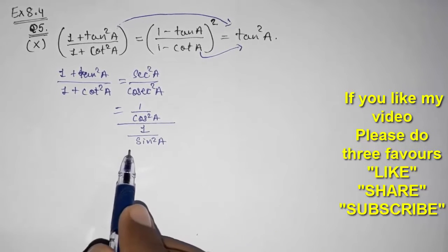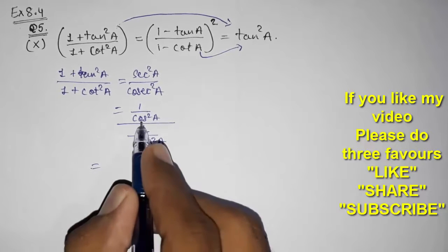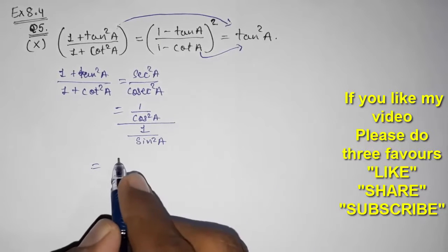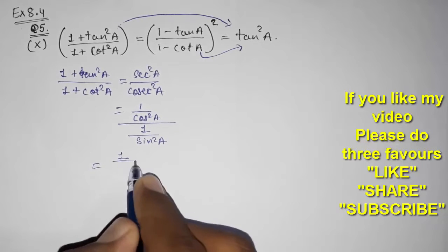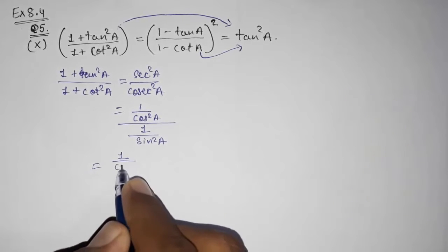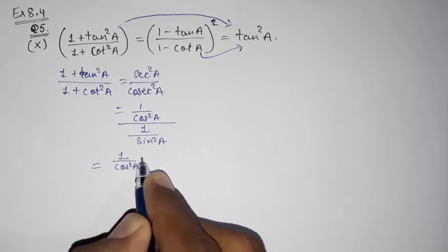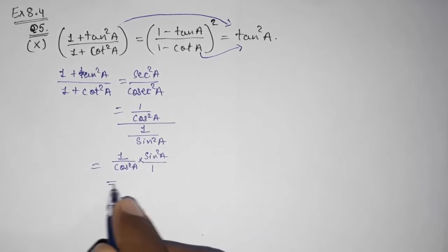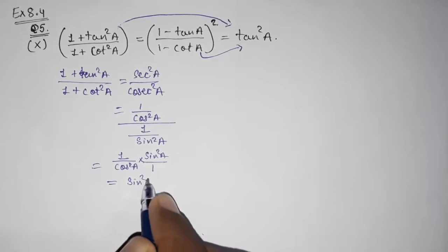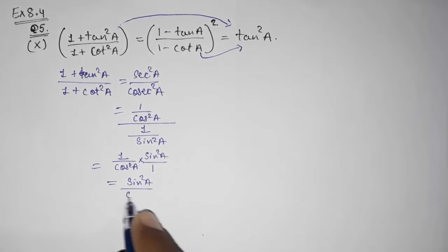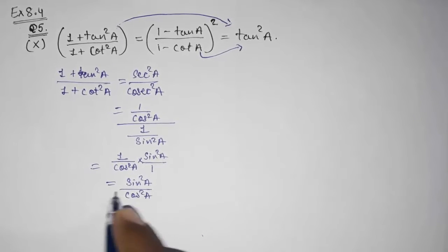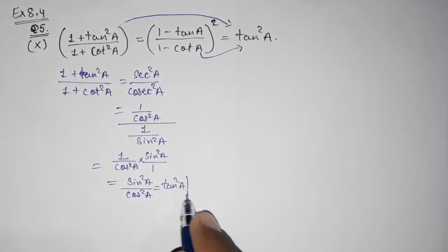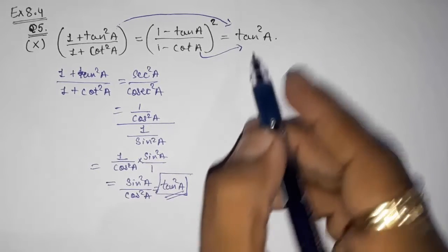Now we have a fraction upon a fraction. The denominator goes to the numerator as its reciprocal — 1/cos²a becomes its reciprocal. So when we multiply, we get sin²a / cos²a. Since sin/cos is tan, that becomes tan²a. We have proved the first part.